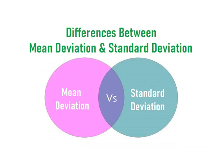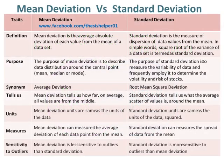Mean deviation is the average absolute deviation of each value from the mean of a data set. Whereas, standard deviation is the measure of dispersion of data values from the mean. In simple words, the square root of the variance of a data set is termed as standard deviation.